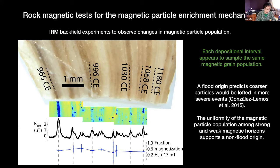The appropriate conclusion is that these depositional intervals with highly enhanced magnetization are all sampling the same magnetic grain population. This actually provides a clue to the nature of the enrichment mechanism. It has been discussed that if you have a flood mechanism, a larger flood can loft larger particles, so you'd expect a coarser grain size population in a larger flood event. We don't see that — supporting a non-flood origin for this speleothem, consistent with the textural evidence and the Jaqueto et al. study. This rock magnetic tracking might be useful for other speleothems where we can't rule out flooding.